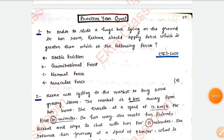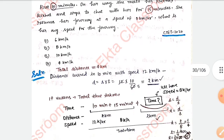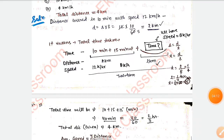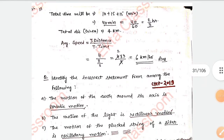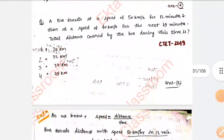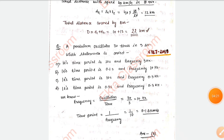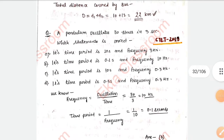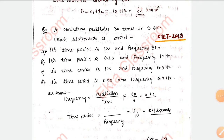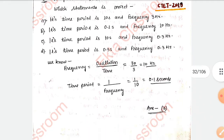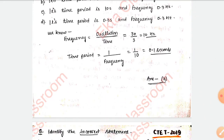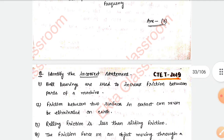I have covered only those PYQs in which you find difficulty to understand. I have covered the static topics which are frequently asked in CTET exams. For example, this type of question: 'A pendulum oscillates 30 times in 3 seconds — which statement is correct?' These types of questions are very important and were asked in CTET 2019. I have covered these most important hot topics.